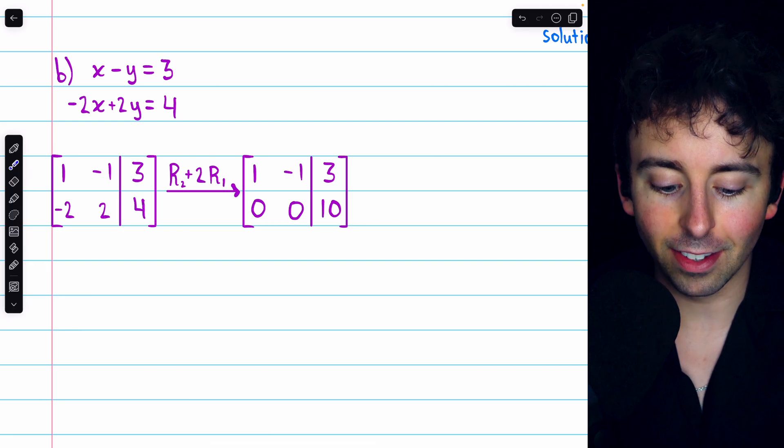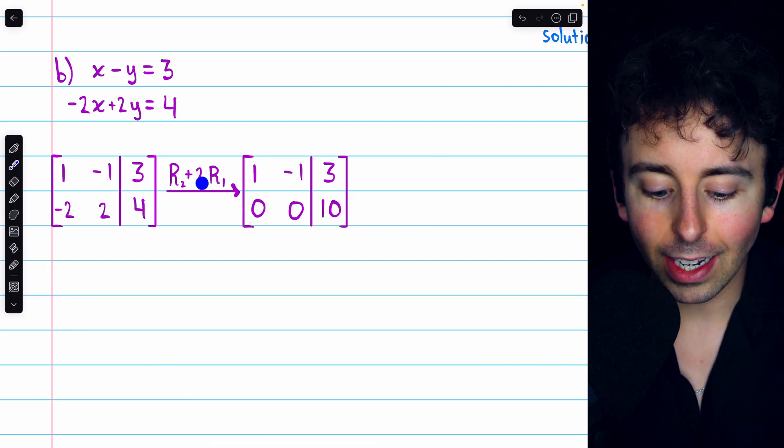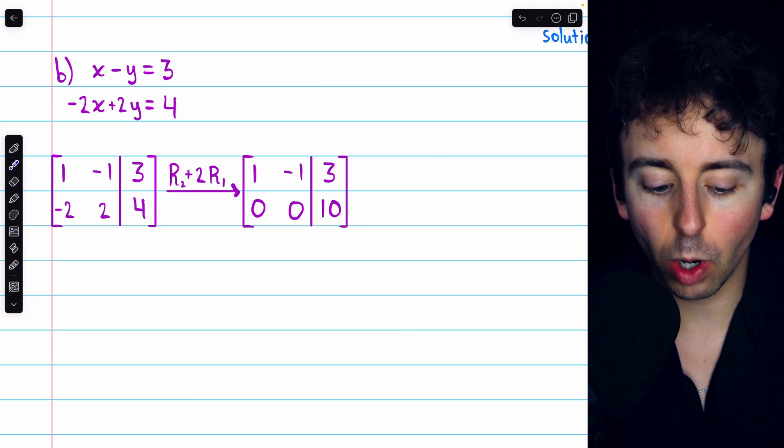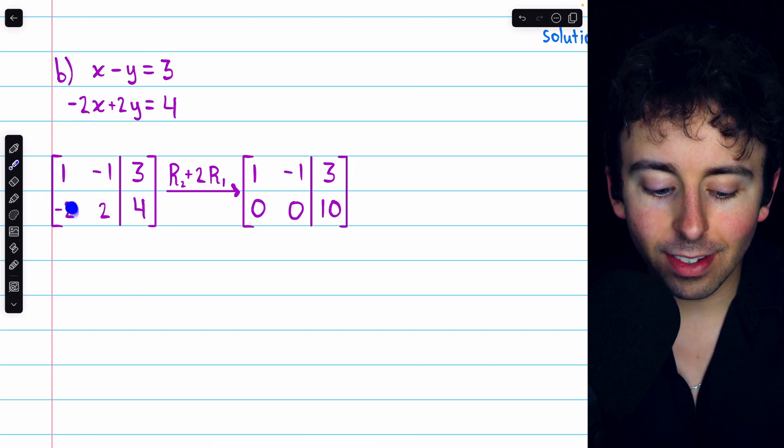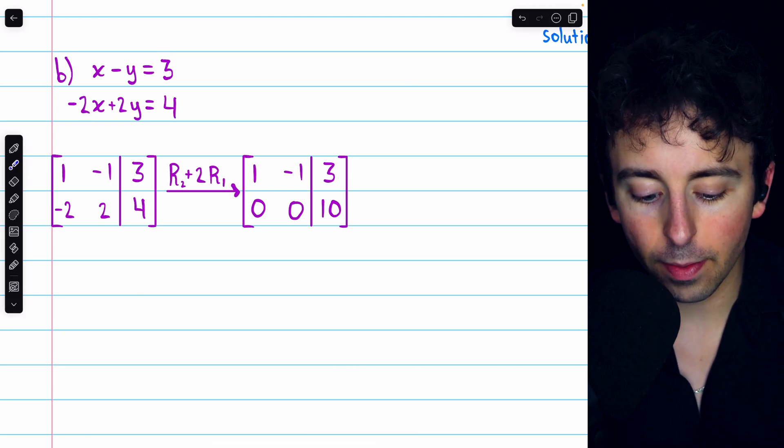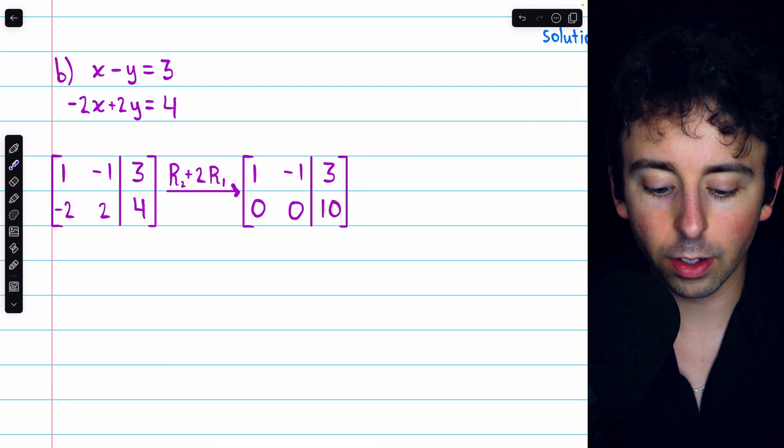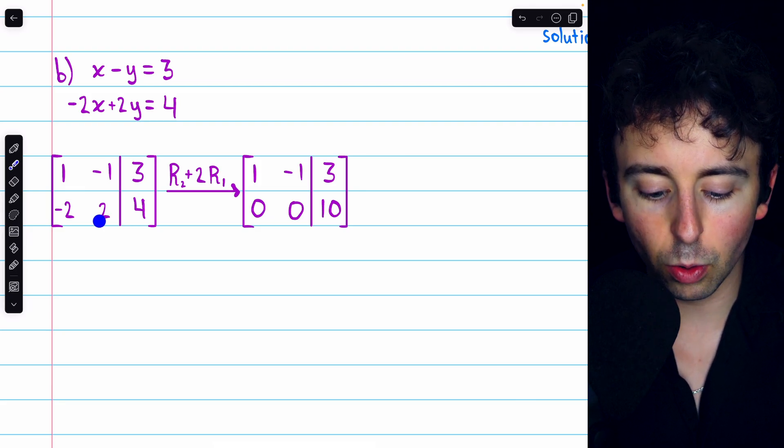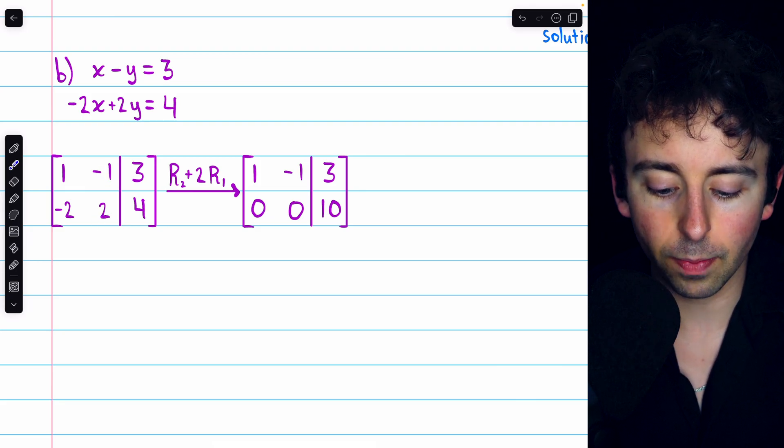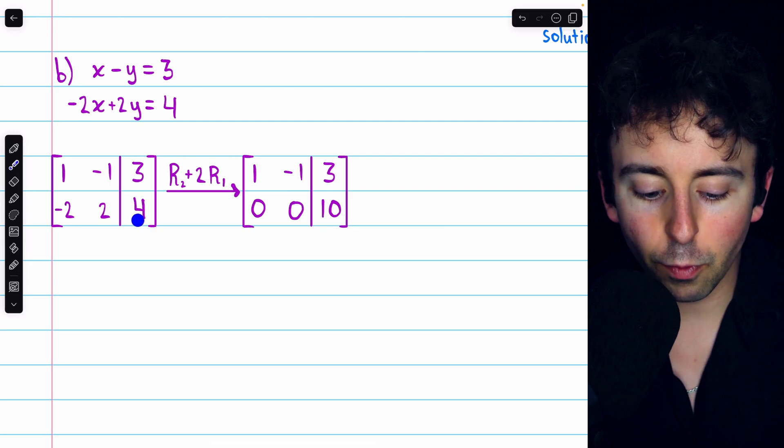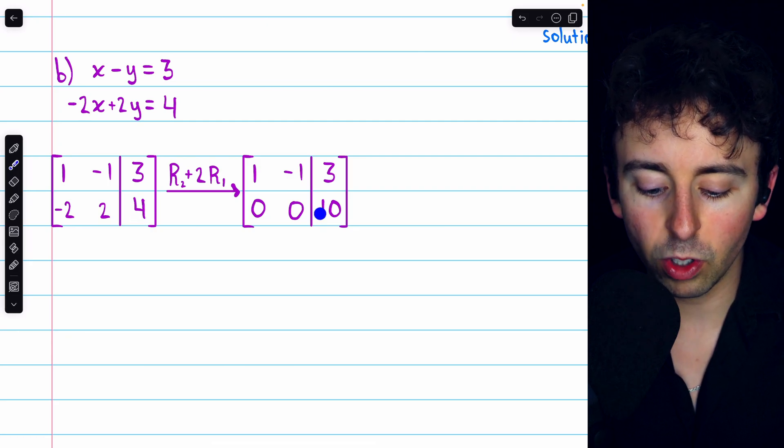Let's solve the system using some elementary row operations. This one is actually really easy. We may begin by adding two copies of row 1 to row 2. That way, we get a 0 below this leading 1. We'd have negative 2 plus 2 times 1, which is 0, 2 plus 2 times negative 1, which is 0, and 4 plus 2 times 3, which is 10.